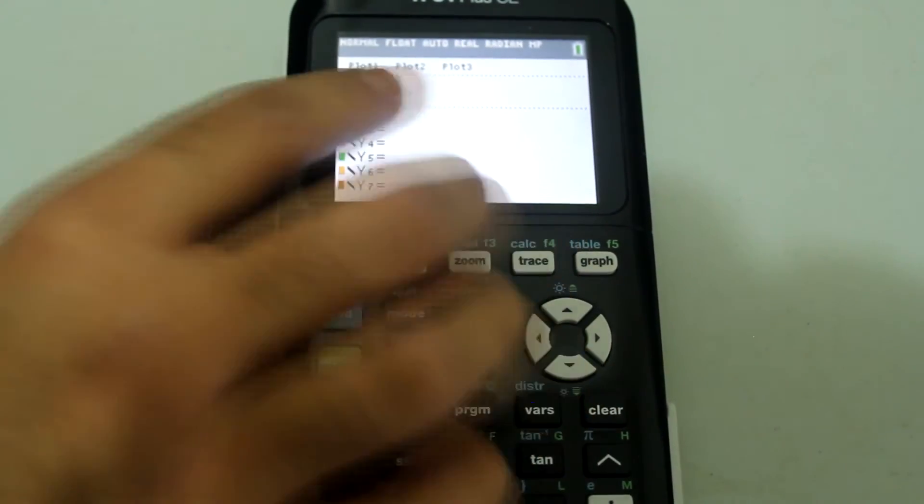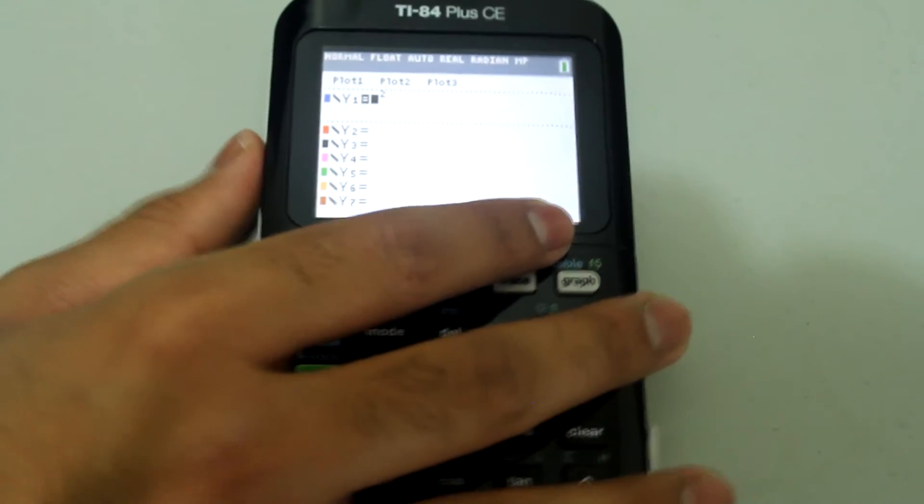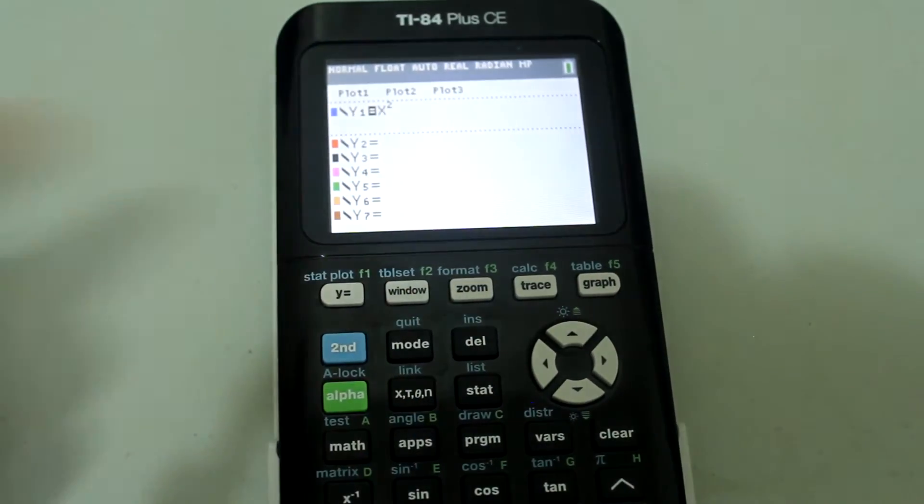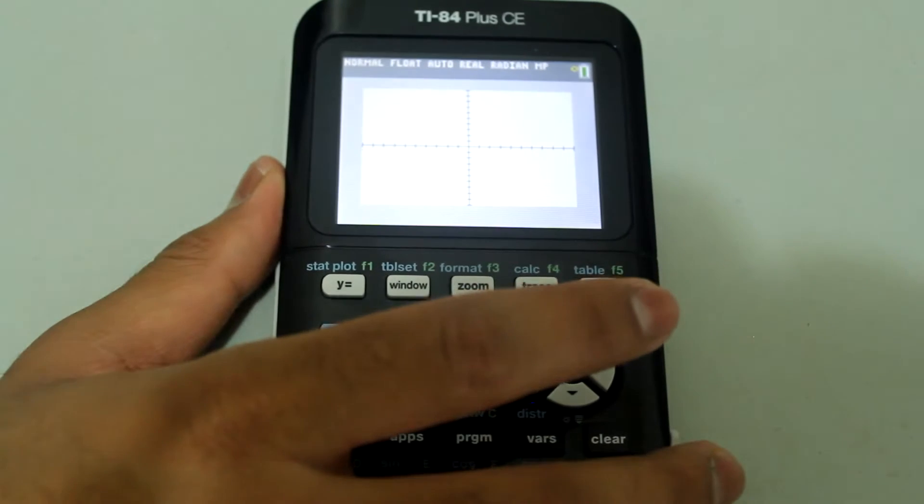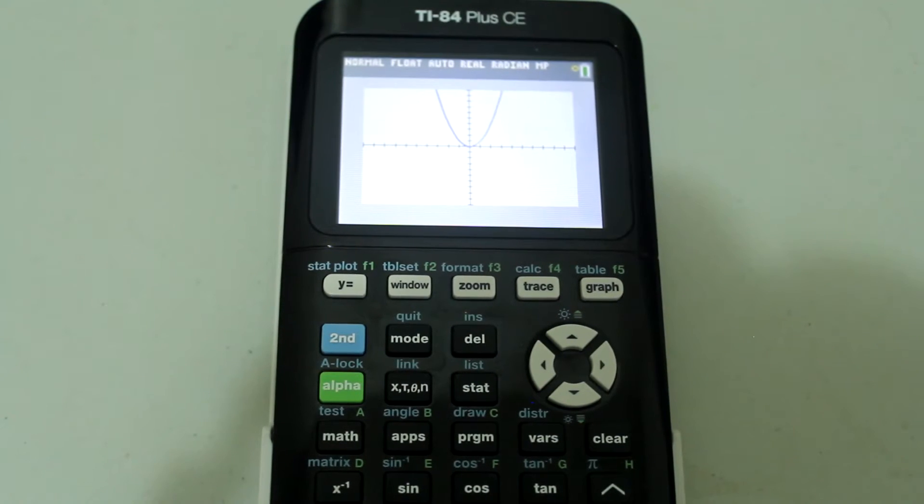Check for other plots too, as they may be on and cause a similar issue. Now if I go back to graph, I get my graph.